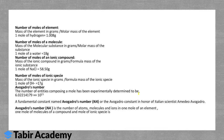For example, if I have one mole of carbon, there are 6.02214179 × 10²³ atoms in it. A fundamental concept named Avogadro's number, N_A, or the Avogadro constant, is named in honor of Italian scientist Amedeo Avogadro. Avogadro's number is the number of atoms, molecules, and ions in one mole of an element, one mole of a compound, and one mole of an ionic species.